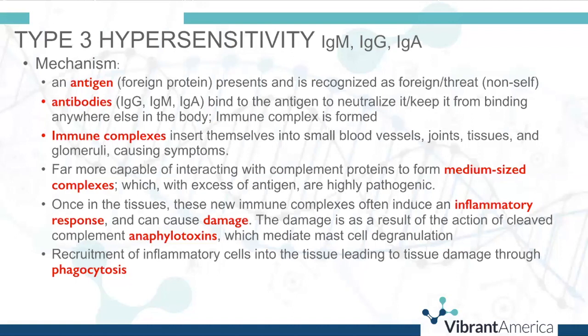IgA immune complexes are actually in the lumen of the intestine. Through secretory IgA action, they are excreted through the stool and do not cross back into the body. So systemically, we're talking specifically about IgG and IgM immune complexes. These are far more capable of interacting with complement proteins to form medium-sized complexes, which become highly pathogenic when there is a lot of antigen, deposited in tissues at a much faster rate.